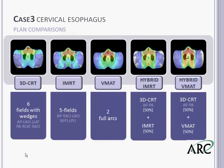Our 3D plan was a six-field arrangement with wedges. Next we have a five-field IMRT plan. In the middle, two full arcs. Our hybrid IMRT was 50% AP/PA and 50% of the five fields previously mentioned. Finally, the hybrid VMAT was the AP/PA again with two full arcs in conjunction.